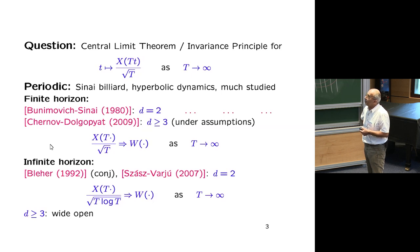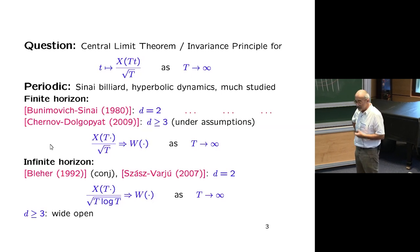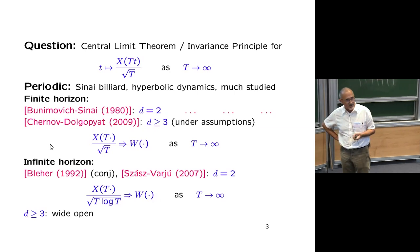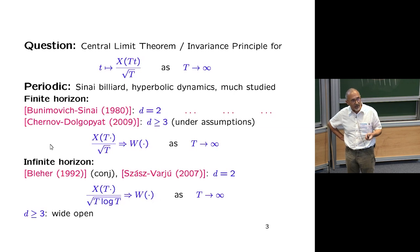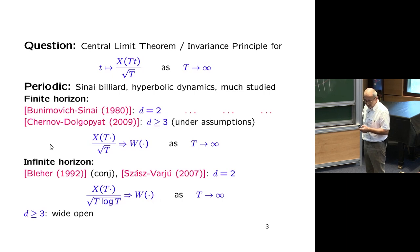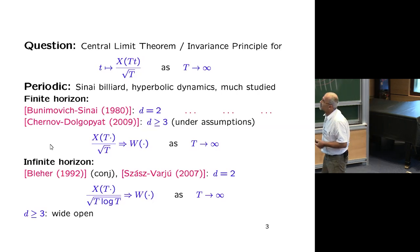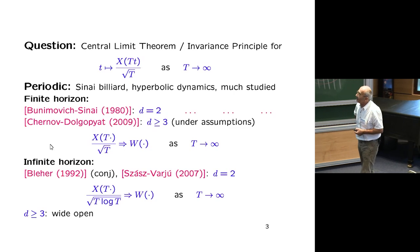This is really one of the great results. The two-dimensional case was settled, and quite some time later the three and more dimensional problem was settled in the finite horizon case, with some assumptions, but certainly the invariance principle holds. So finite horizon in two dimensions is absolutely settled; in three dimensions there are some assumptions but the same is true.